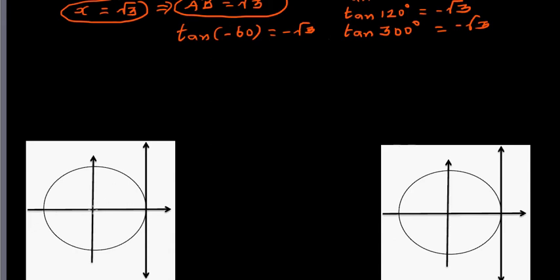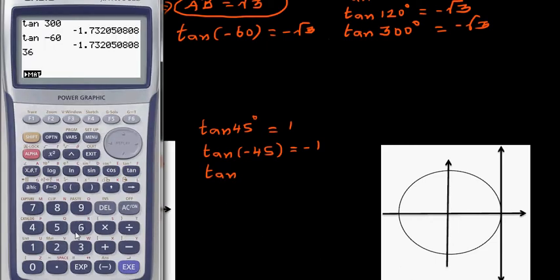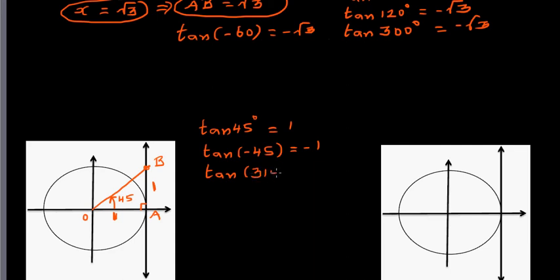Now let's finish with tan(45°). In the unit circle with a 45-degree angle, if OA = 1, then by symmetry AB = 1 as well. So tan(45°) = 1. And tan(-45°) = -1, or equivalently tan(315°) = -1.